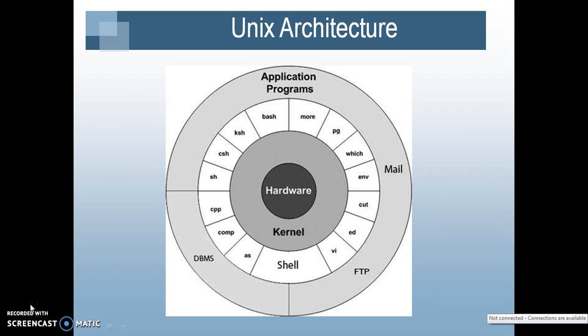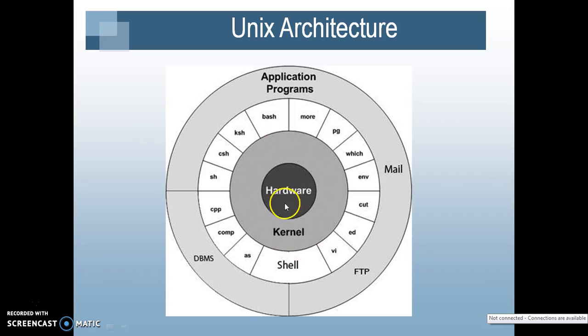This is the basic architecture diagram of Unix architecture. The innermost core has the hardware. On top of the hardware we have the kernel, and the topmost layer has the application program. If an application program wants to give a command to the hardware, the intermediate interface is the kernel.